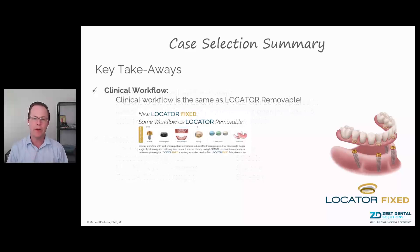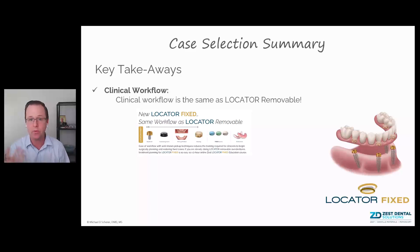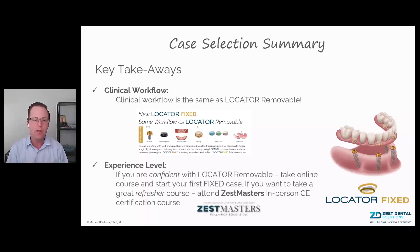One great thing for clinicians thinking about case selection: Locator Fixed really fits into your everyday workflow that you use for Locator removable. It's essentially the exact same clinical and laboratory workflow, other than at the end you use the gold housings and special fixed inserts instead of the silver Locator housings with removable inserts. Also very importantly, we want to make sure we change our prosthetic design to a nice cleansable hybrid — something with as much convex contour as possible — compared to a removable prosthesis that typically has flanges. A fixed prosthesis should not have flanges. Make sure your experience level is right — if you're confident with Locator removable, take an online course of two to three hours and then jump right into your first Locator Fixed case.